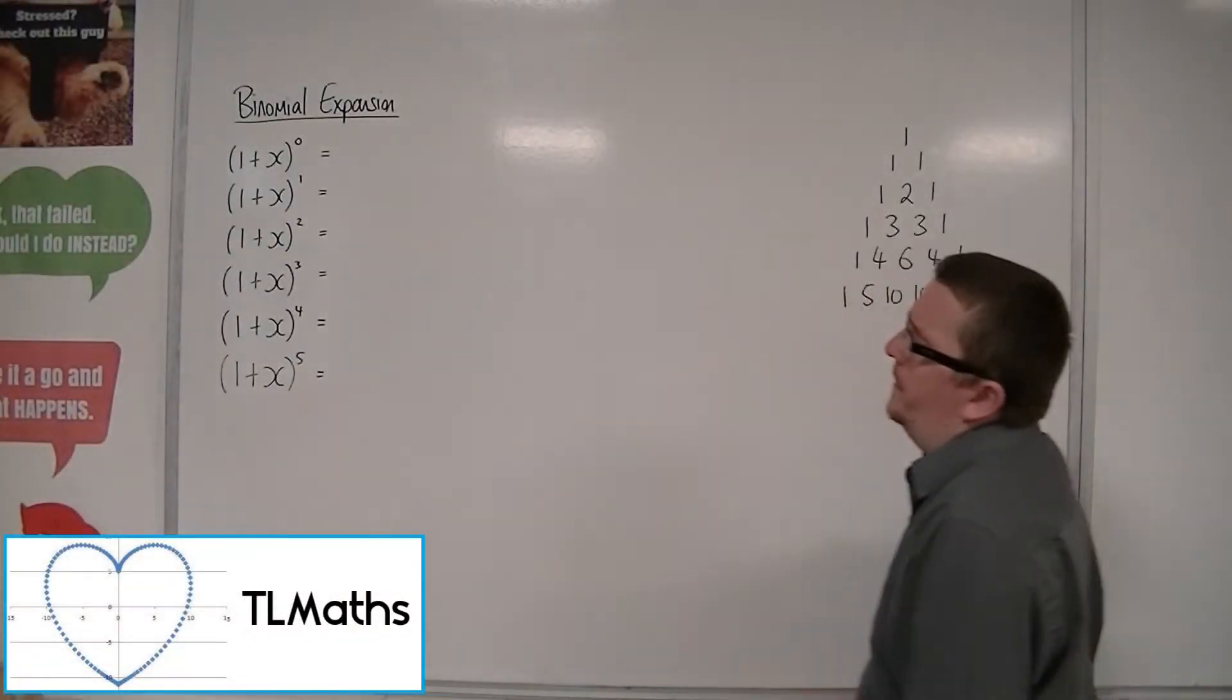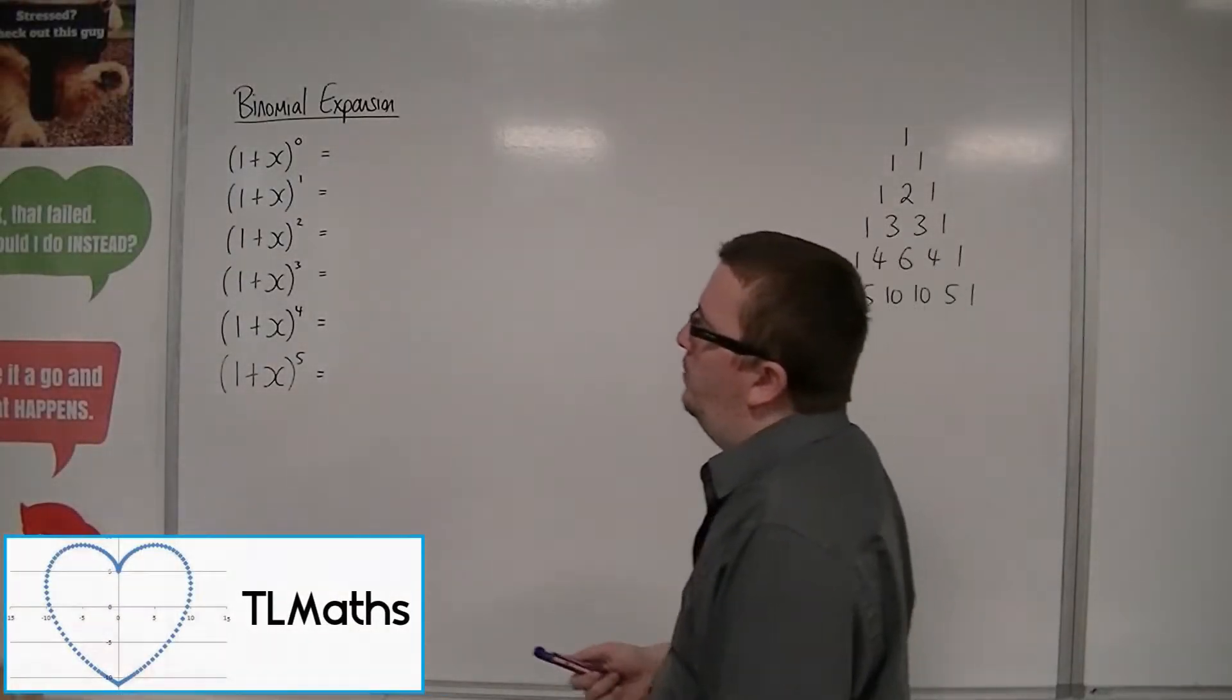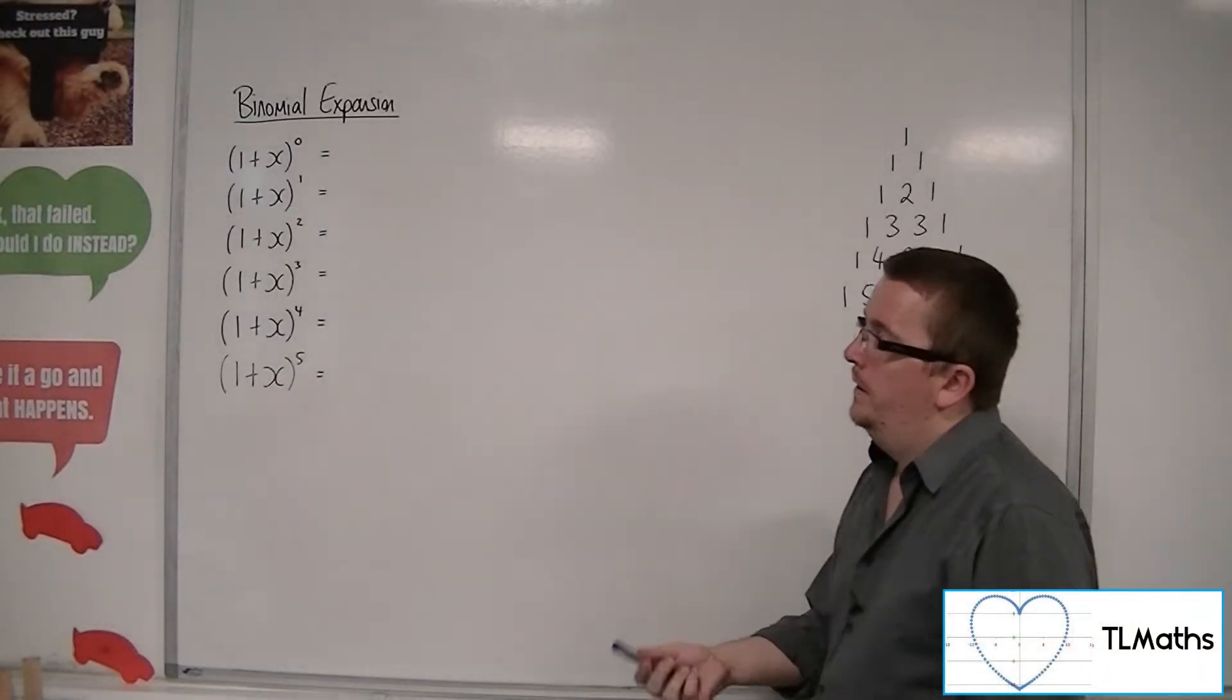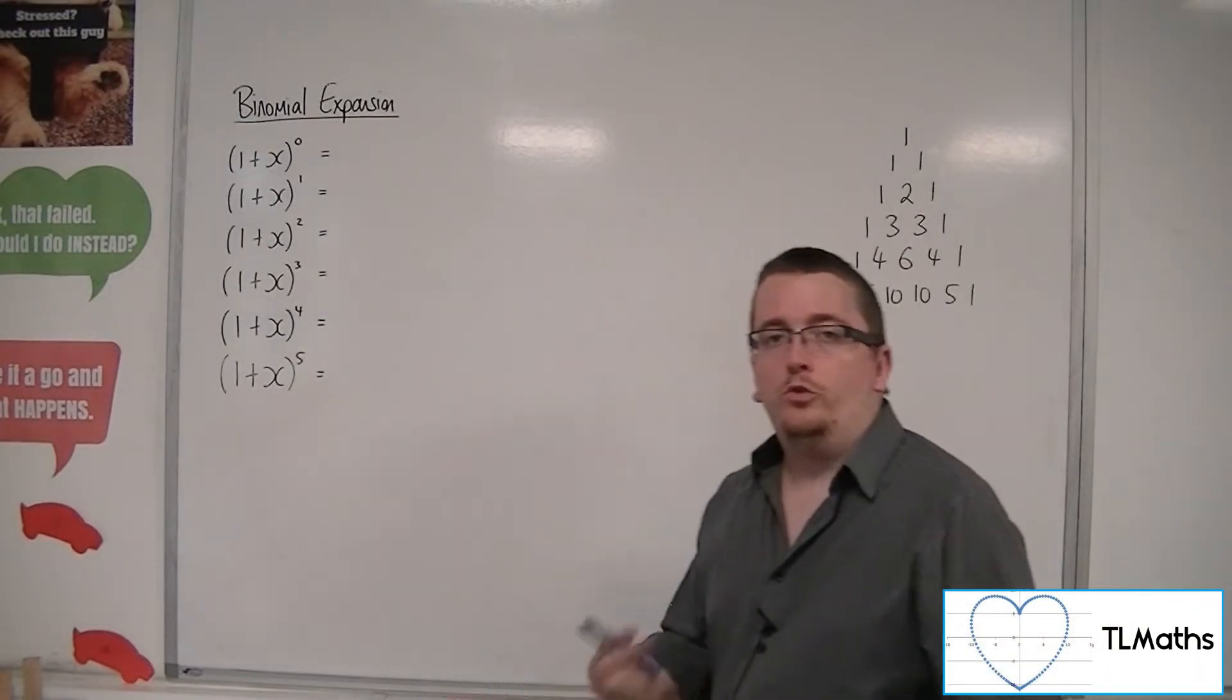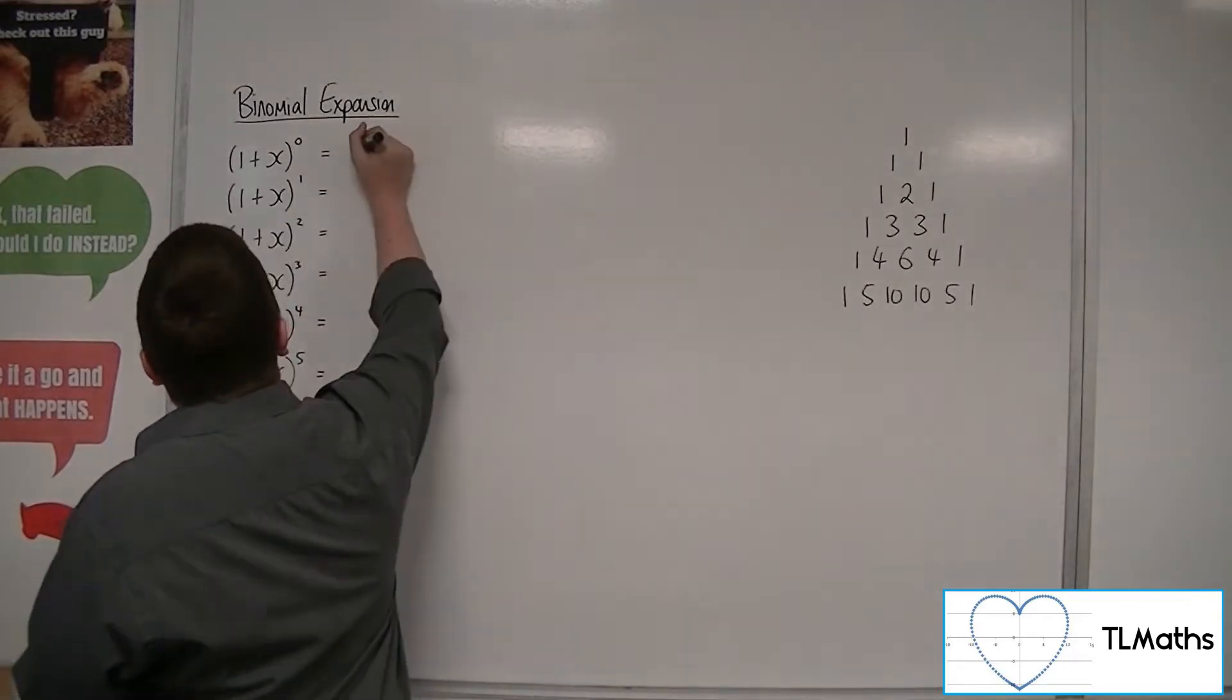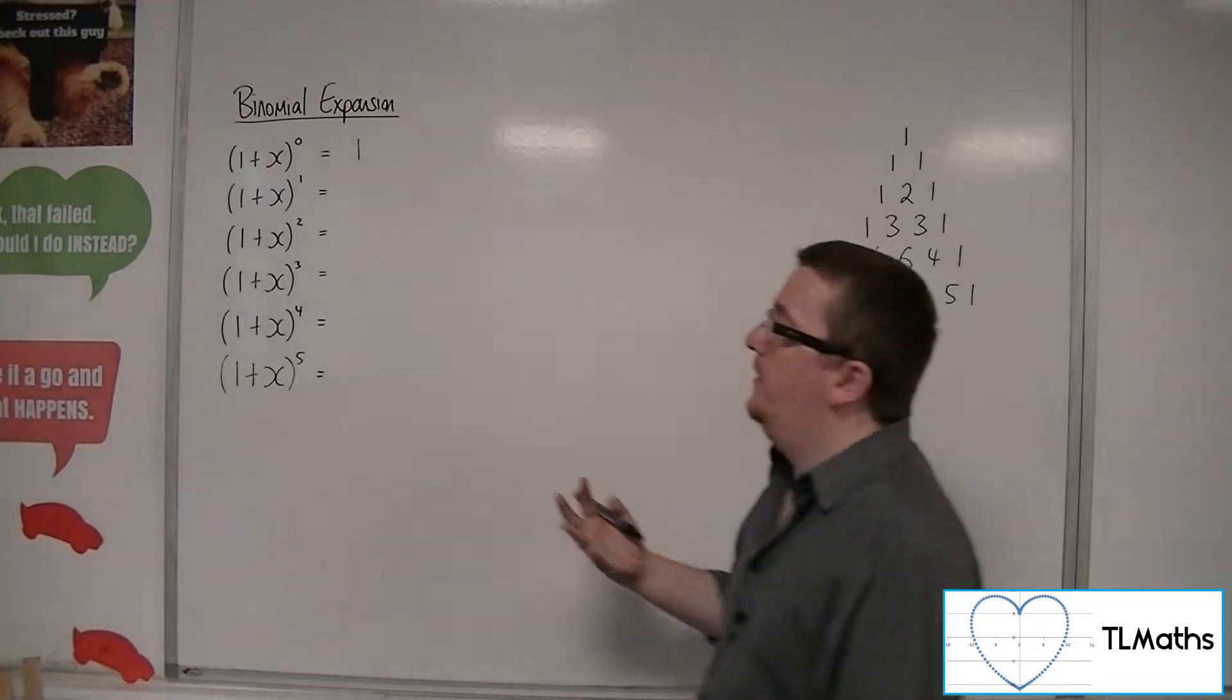So let's look at expanding each of these. We've got (1+x)^0, (1+x)^1, (1+x)^2, and so on. So (1+x)^0 will just be 1. So that is just 1, because anything to the power of 0 is 1.